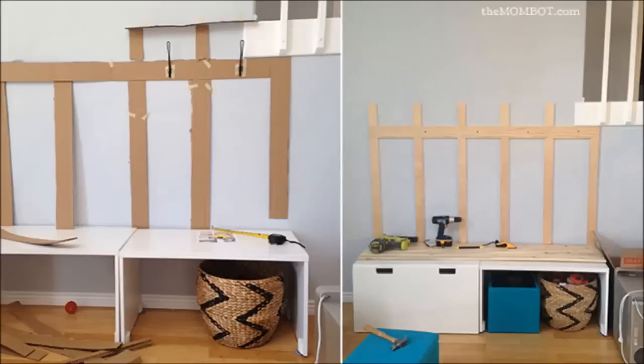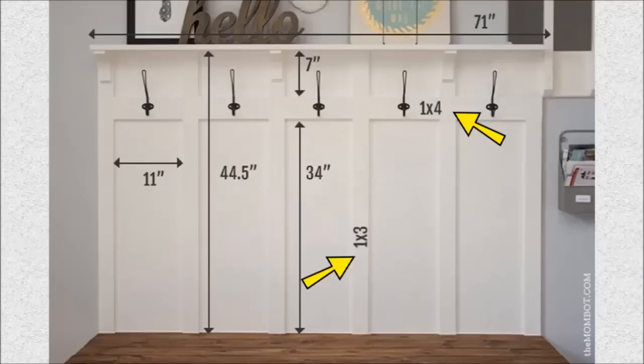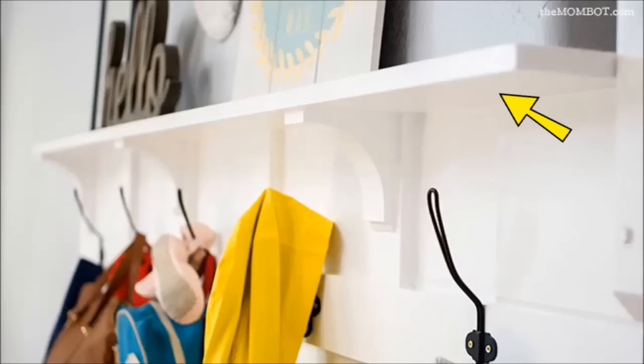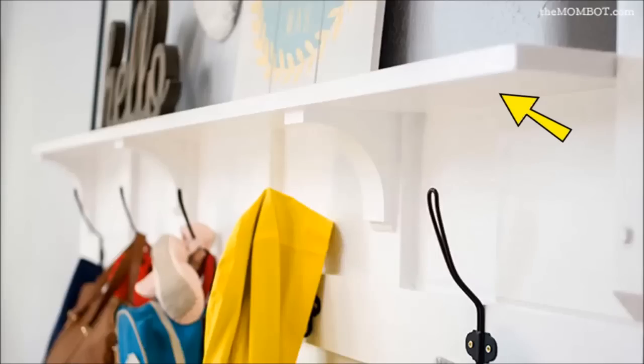Lay stained pine boards on top of the benches and screw into the benches from underneath. Cut 1x3s and 1x4s and attach to the wall with a nail gun, then attach the shelf using kreg jig. Hang corbels using a nail gun. Paint the whole board and then install the hooks.